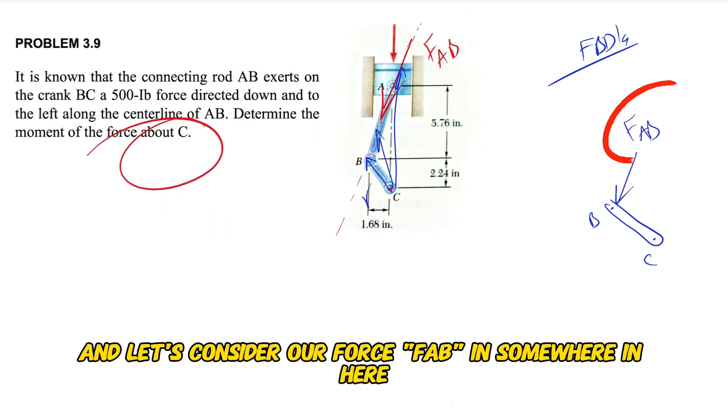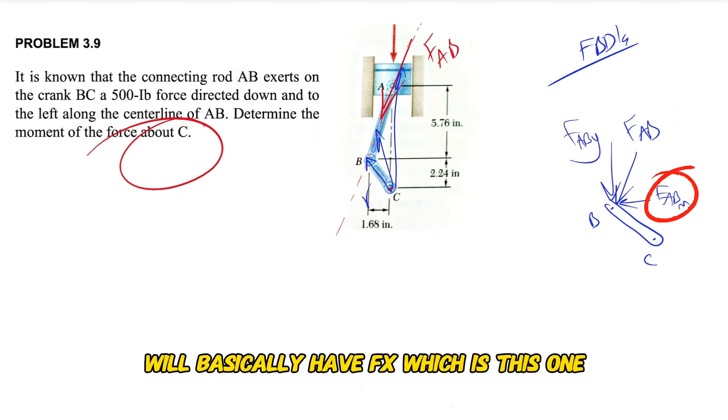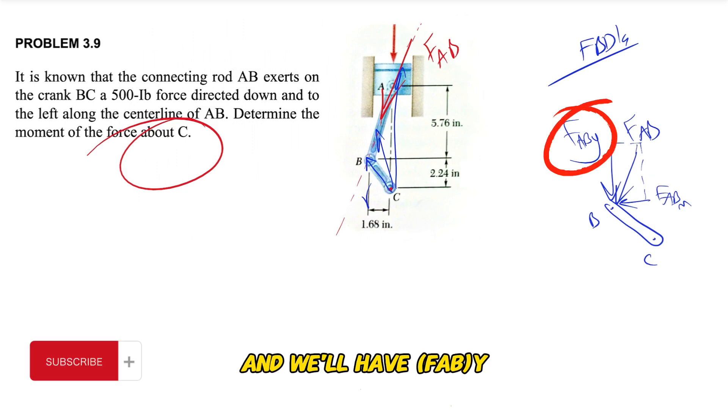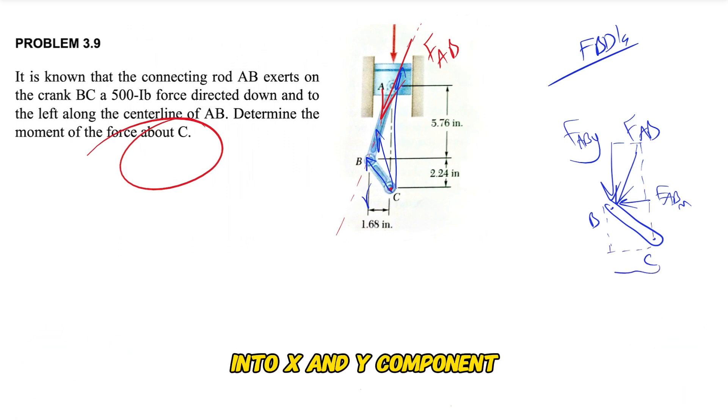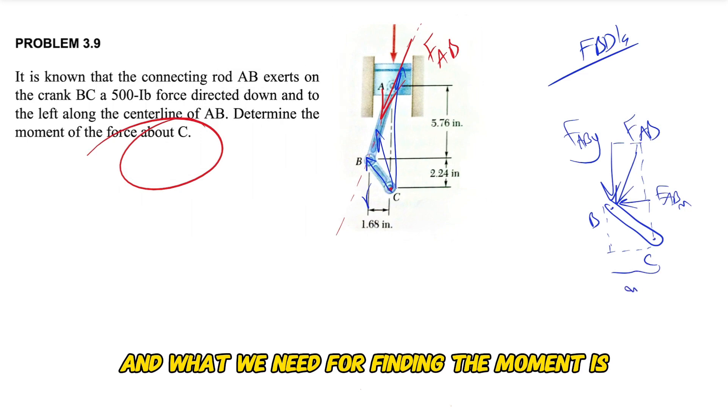And let's consider our force FAB somewhere in here. We basically have FAB x, which is this one, and we'll have FAB y. So we're just dissolving the FAB into x and y components.